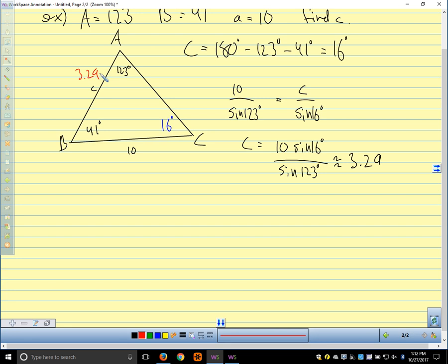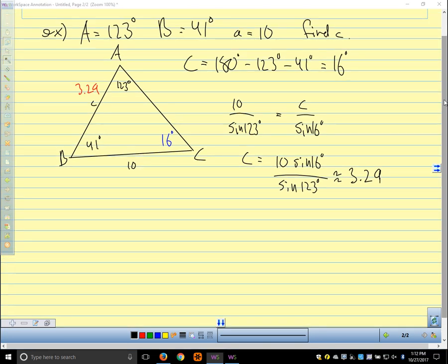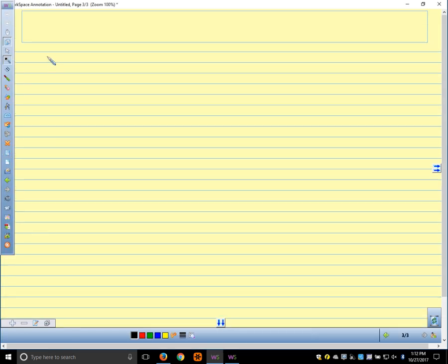If you do some intermediate calculations, you should keep, when you do the sine of 16 or the sine of 123, you should keep four decimal places because your accuracy can go way down if you round in the middle of your calculations. All right, questions there? Okay, let's look at another one where we want to solve the triangle.